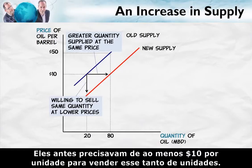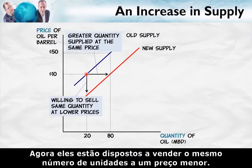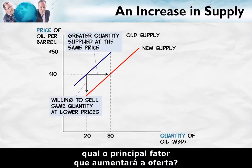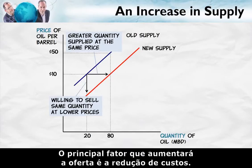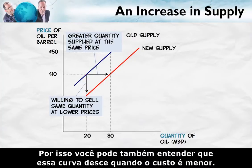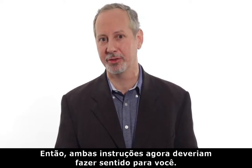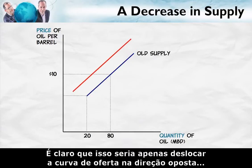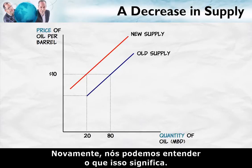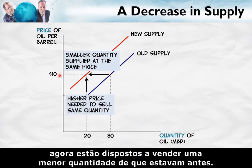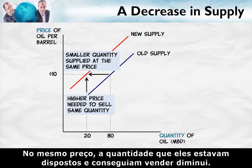They used to need at least $10 per unit to sell this many units, but now they're willing to sell that same number of units at a lower price. The major factor which is going to increase supply is a reduction in costs — that's why you can also understand this curve going down as costs fall. A decrease in supply, of course, is just moving the supply curve in the opposite direction, to the left and up. With the decrease in supply, suppliers at the same price are now willing to sell a smaller quantity than before.